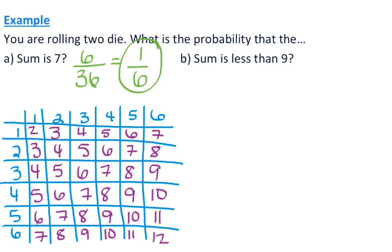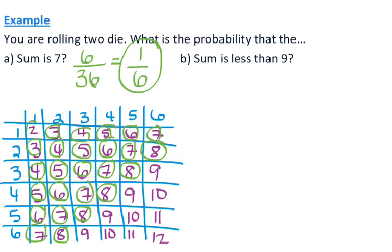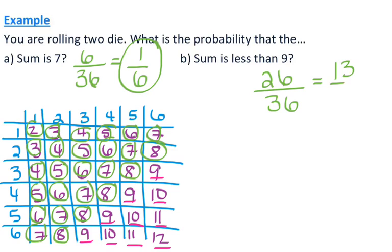What is the probability that the sum is less than 9? Less than 9 would be 8 or below. Instead of counting all those numbers, let's look at the numbers that are 9 or greater. There are 1, 2, 3, 4, 5, 6, 7, 8, 9, 10 — so 10 numbers are 9 or greater, which means 26 of them are less than 9. That's 26 out of 36, which is 13/18.